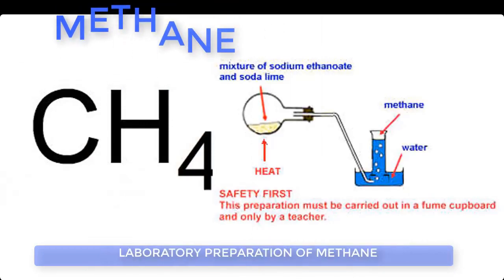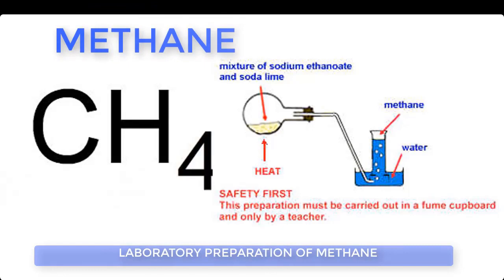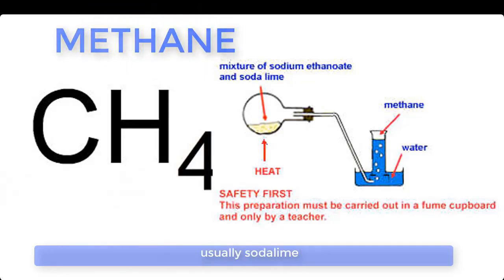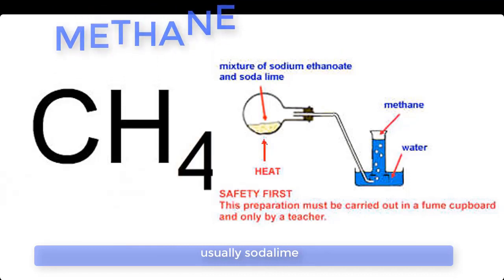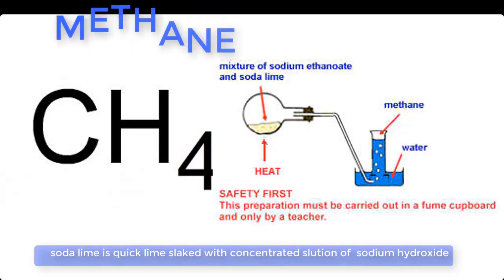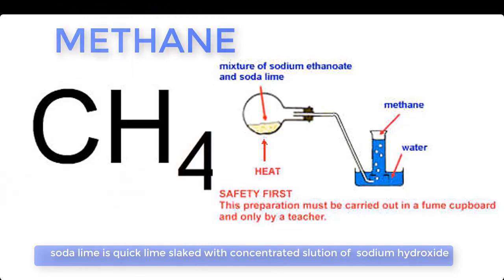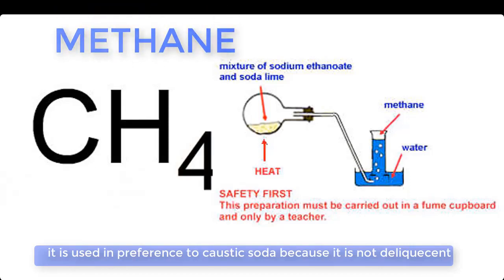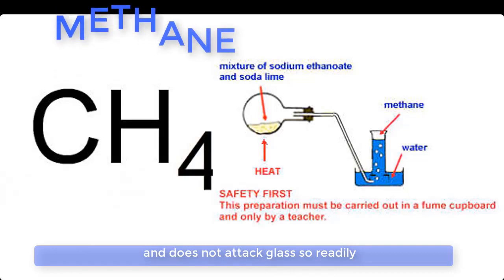Laboratory preparation: Methane is usually prepared by heating anhydrous sodium ethanoate with an alkali, usually soda lime. Soda lime is quicklime slaked with a concentrated solution of sodium hydroxide. It is used in preference to caustic soda because it is not deliquescent and does not attack glass so readily.